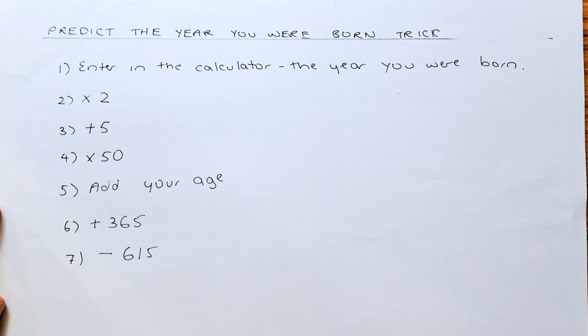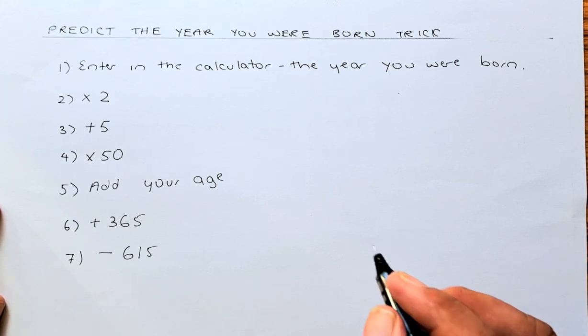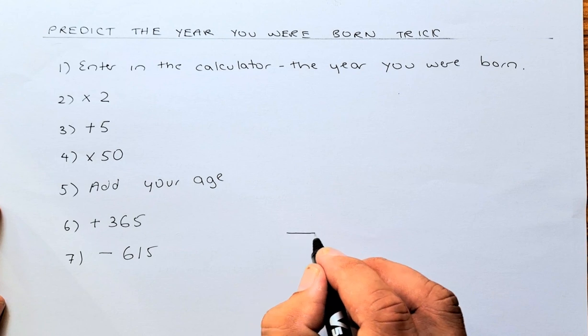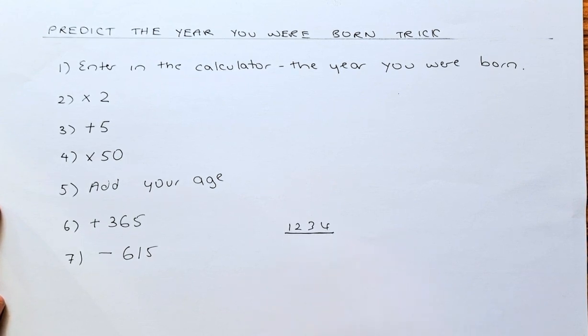So now, you will get either a 5 or a 6-digit number. The first 4 digits is going to be your year you are born. So the first 4 digits, 1, 2, 3, 4, the first 4 digits is going to be the year you are born.